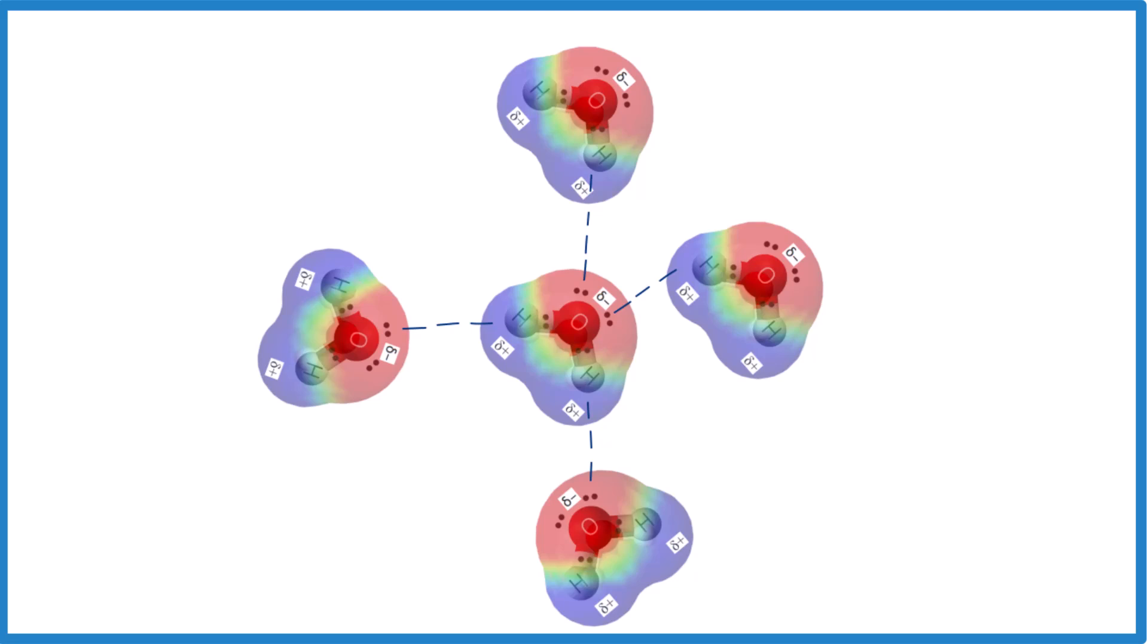This is Dr. B looking at how many hydrogen bonds one water molecule can form. The answer, four. Thanks for watching.